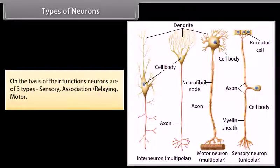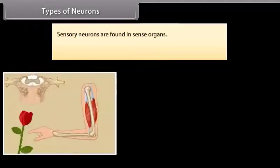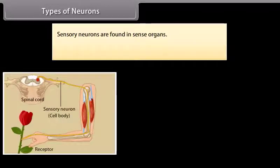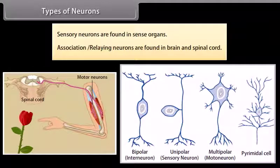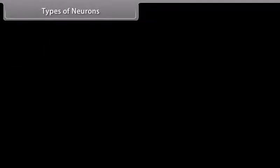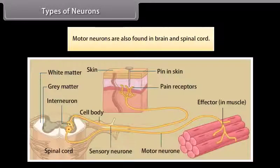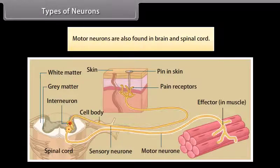On the basis of their functions, neurons are of three types: sensory neurons, association/relaying neurons, and motor neurons. Sensory neurons are found in sense organs. Association/relaying neurons are found in the brain and spinal cord. Motor neurons are also found in the brain and spinal cord.